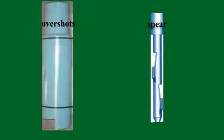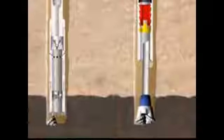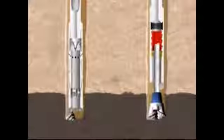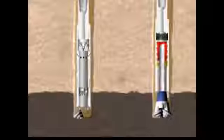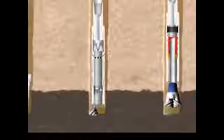Overshots are preferred to spears because spears can be difficult to remove if the fish is still stuck. Both overshots and spears have multiple grapples that can grip the fish securely and once gripped then uses jars or hammer-like blows in hopes of freeing the fish.